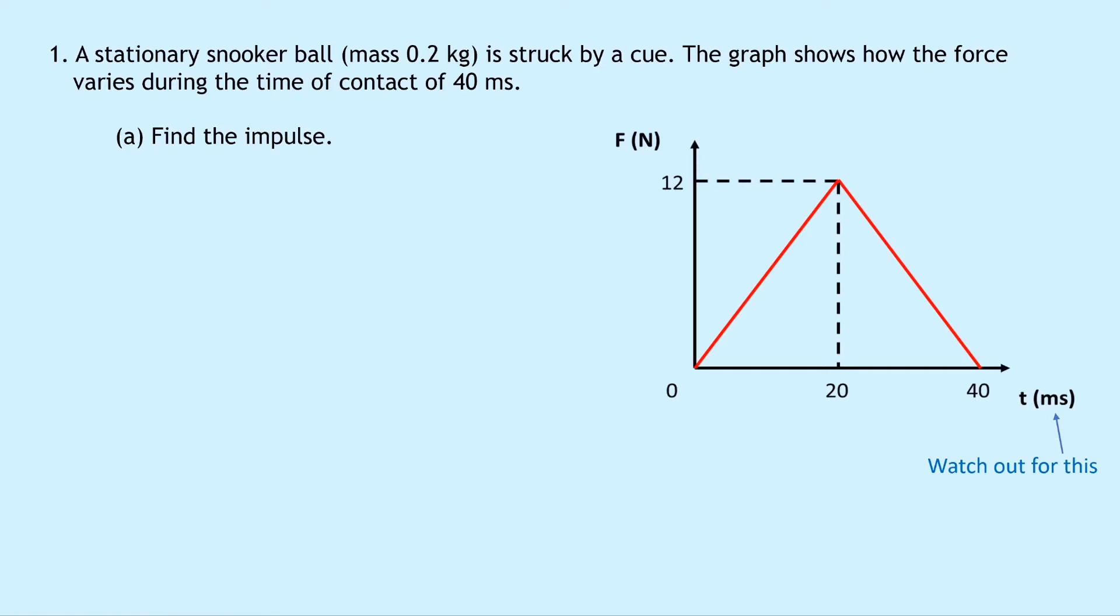So the first thing we need to do to find the impulse is to write down the impulse is equal to the area under the force-time graph. And so if we look under the graph we have this section here and this section here. So we've got two triangles split up by this dashed line. So that means we're going to need to use the relationship for the area of a triangle. So this equals a half times base times height plus a half times base times height. And if we put in our numbers now for the two triangles we have a half times 0.02 which is our 20 milliseconds there times the 12 which is the height plus a half times 0.02 another 20 milliseconds from there to there times 12 again the height there. So if you put that into your calculator you should get 0.24 newton seconds.